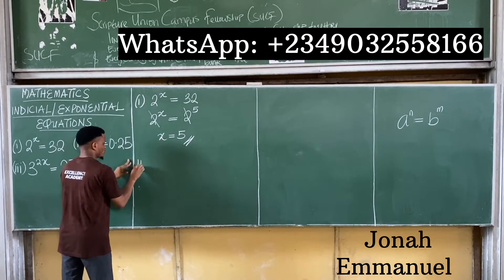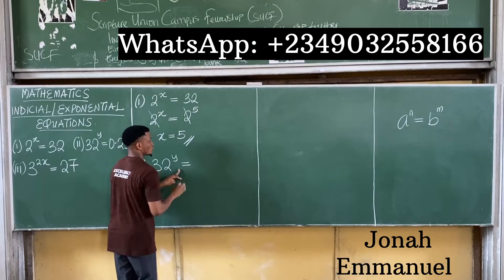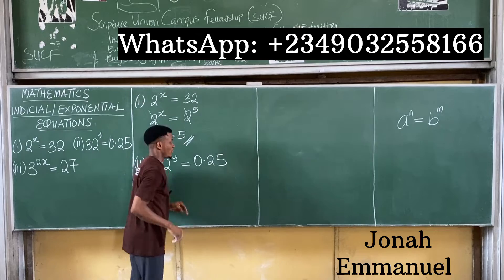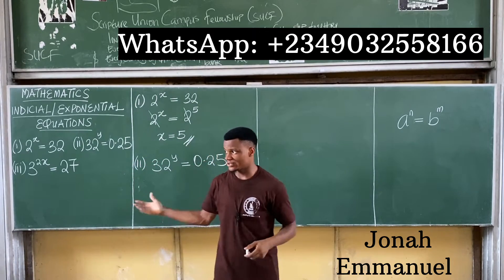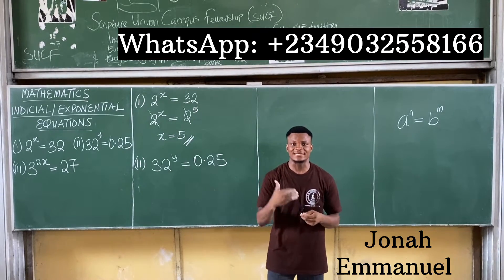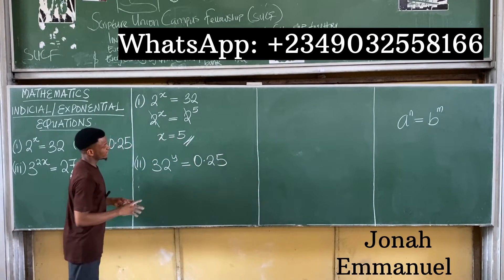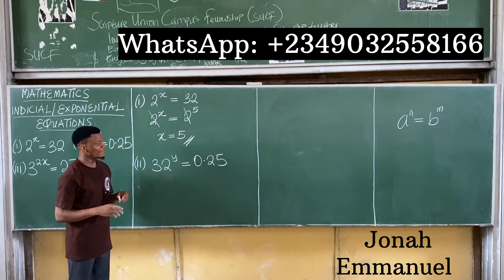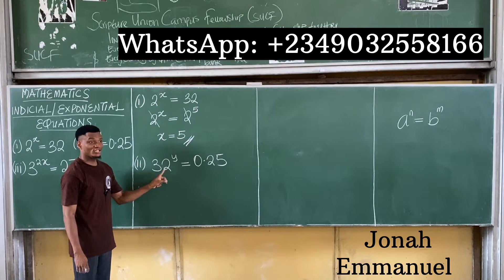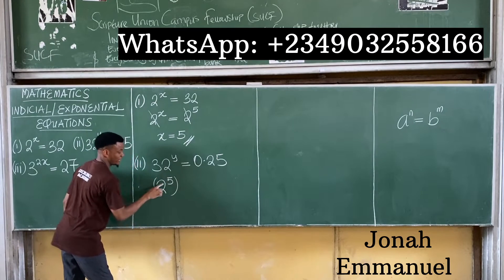Let's take a second example: 32 to the power y is equal to 0.25. We are working with the same concept — express both sides of the equation in the same base. This one here deals with a good knowledge of your multiplication table. 32 is simply 2 to the power 5, so this becomes 2 to the power 5 all to the power y.